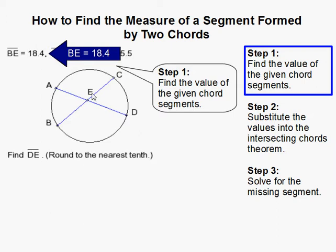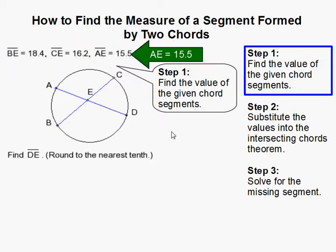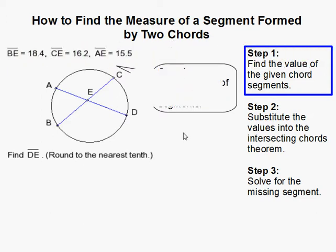We're given the segment BE is 18.4, CE is 16.2, and AE is 15.5.